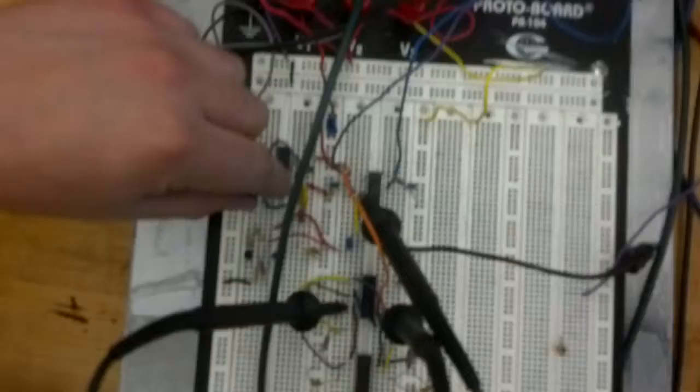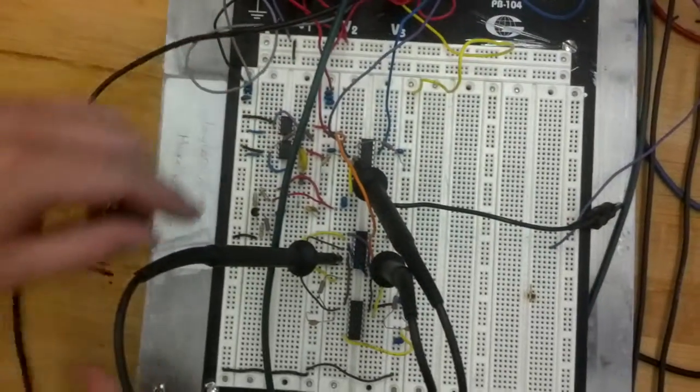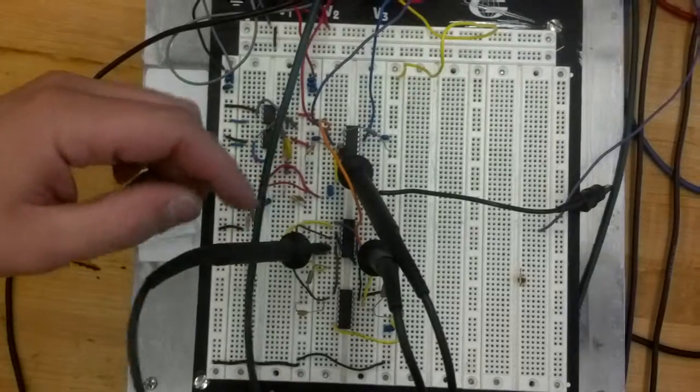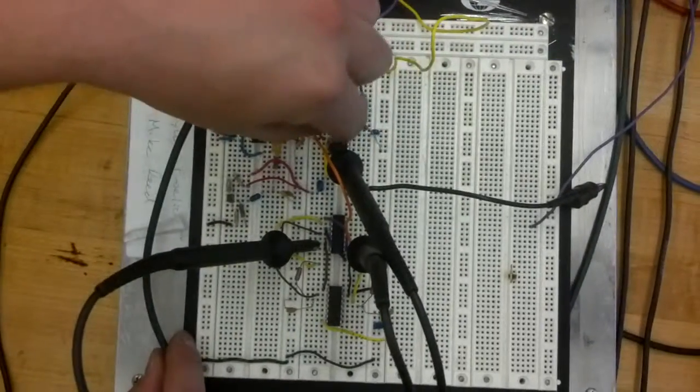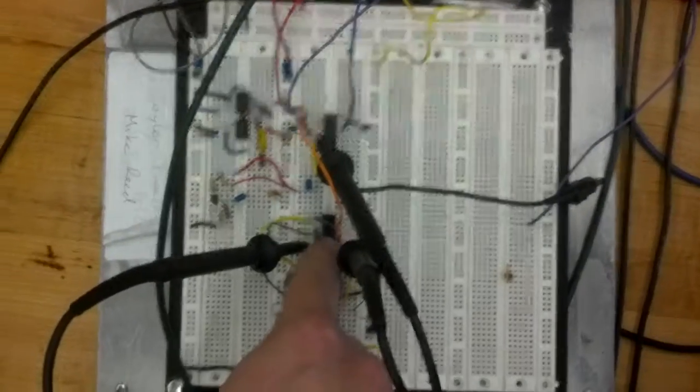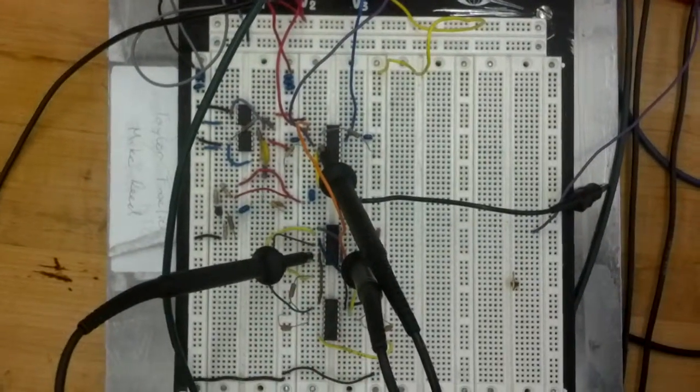So, this is our circuit. This area here is triangle wave generation. This BJT amplifier down here is to amplify the triangle wave to the proper level. Up here is a comparator, which is acting to create our actual PWM signal. And down here is our dead time circuitry using logic buffers.